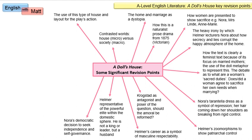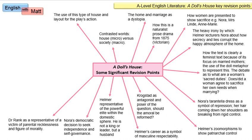Dr. Rank is representative of a victim of parental recklessness. He says that because of his father's lifestyle, he's having to bear his disability of the spine. He also discusses Krogstad in Act 2, posing the question of whether somebody of moral disrepute should be given a second chance. His tuberculosis of the spine is representative of the disease of society — the idea that corrupt people being given second chances is not a good thing, in Dr. Rank's view, because it leaves good people out in the cold.